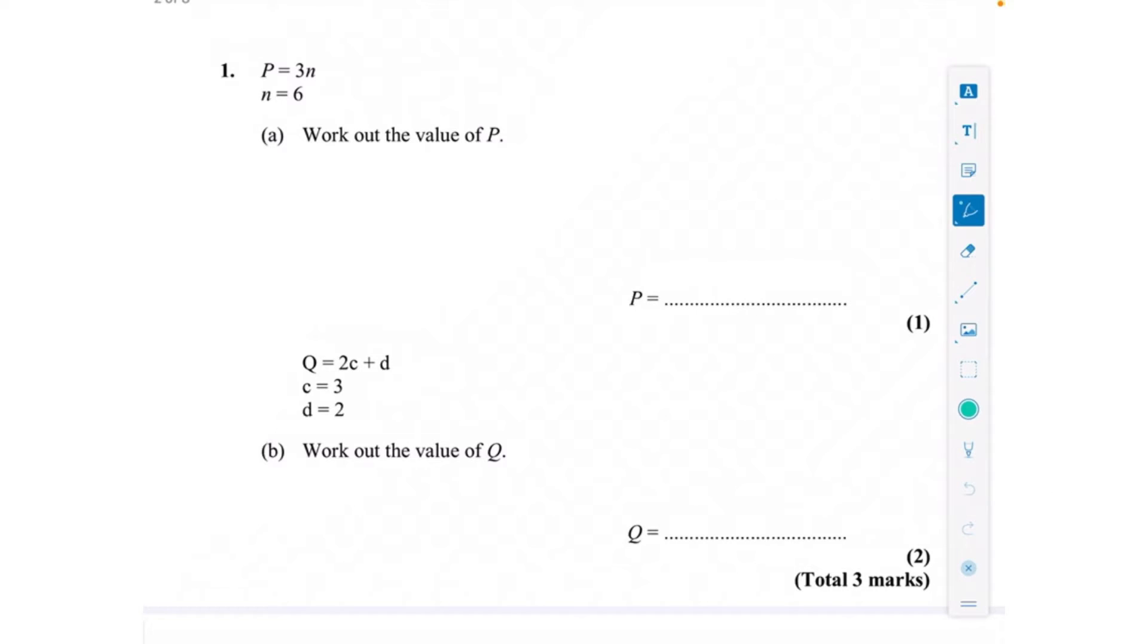Substitution is when you're changing the letter for the number. So p equals 3n, now that means three lots of n. 3n is the same as three times n, but we don't write the times because it could look like an x and that would be quite confusing when it came to changing letters to numbers. So 3n means three lots of n, and we're told that n is 6.